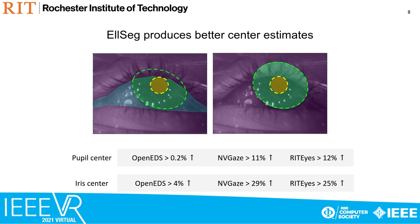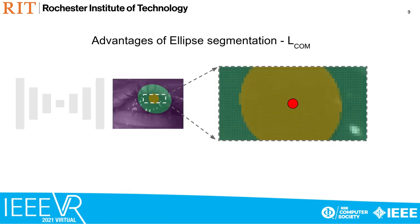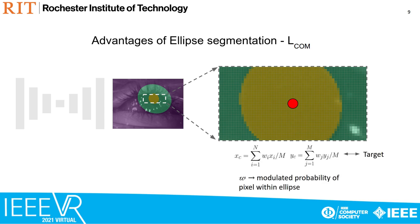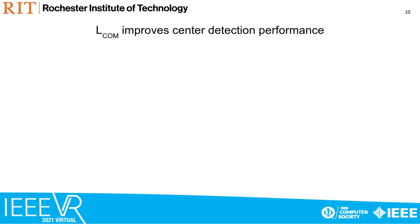We observe improvements in center estimates when fitting ellipses on the LSEC segmentation outputs as opposed to I-part segmentation. The center of any convex shape can be described as a weighted summation of its spatial extent. LSEC leverages this observation to supervise the center of mass of output probability maps with the ground truth ellipse center. The inclusion of the center of mass loss further improves pupil and iris center detection performance over ellipse fitting on the segmentation outputs.